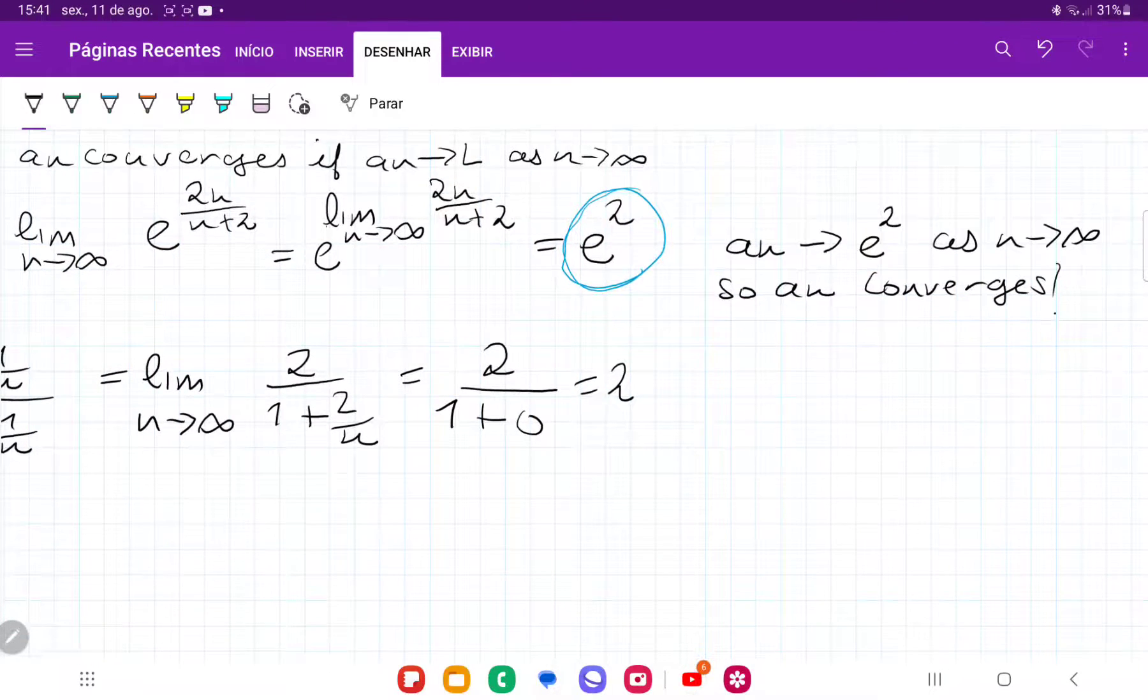So that is it. We found the limit for a_n, and we saw that the limit exists, and therefore the sequence here must converge.